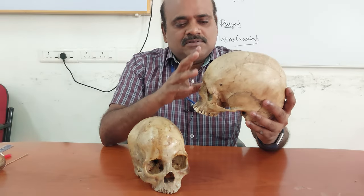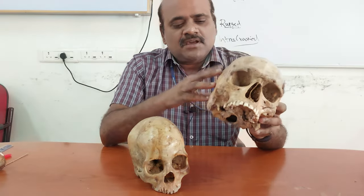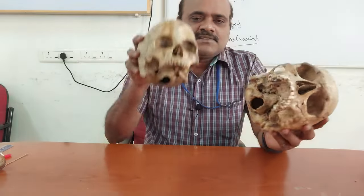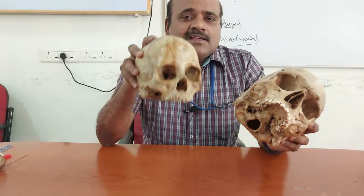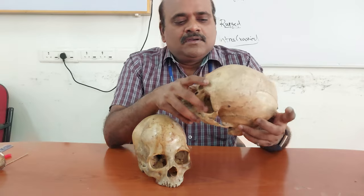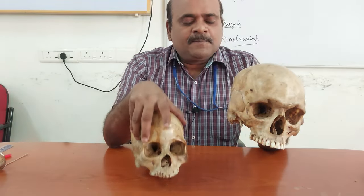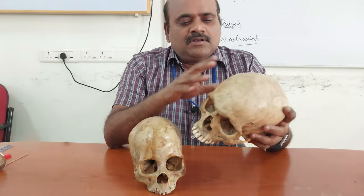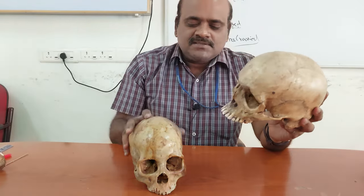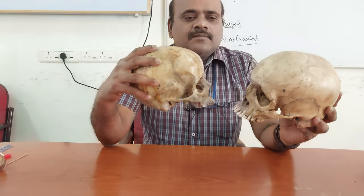Coming to the skull specifically, the overall size is larger in the male; if you measure the intracranial capacity or endocranial volume, it comes to around 1500 cc. The female skull is relatively smaller, with intracranial capacity about 10 percent less compared to the male — that is 1350 cc. If you compare the walls of the skull, they are thicker in the male and thinner in the female. In terms of shape, the male skull is longer — that is, dolichocranium — whereas the female skull is more rounded and short, called brachycranium.